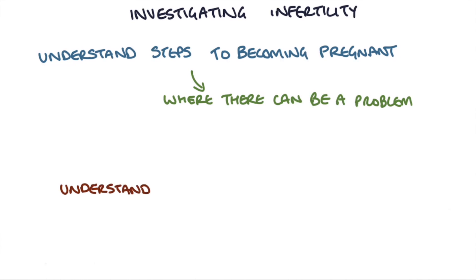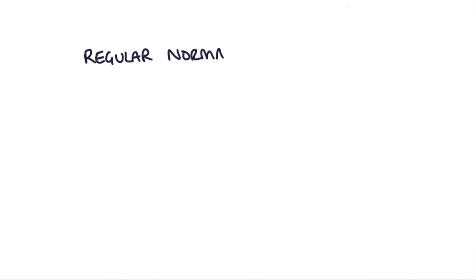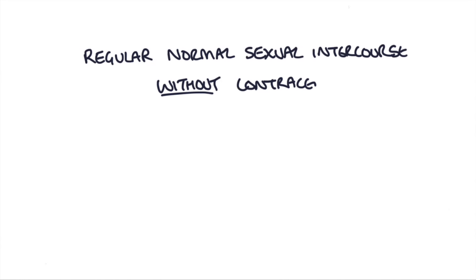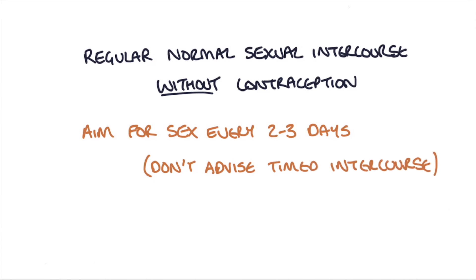I recommend checking out my video on the menstrual cycle, as it's really important to understand how the eggs develop and ovulation occurs each month. First of all, the couple need to be having regular, normal sexual intercourse without contraception. They should aim to have sex around every two to three days. Although pregnancy is more likely around ovulation, we don't generally advise timing intercourse as it can lead to anxiety and pressure — it's better to just have regular intercourse throughout the cycle.